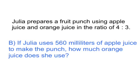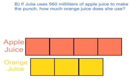On to part B — same setup. If Julia uses 560 milliliters of apple juice to make the punch, how much orange juice does she use? I'll begin with our same model. We have the 7 parts: 4 parts of apple juice to 3 parts of orange juice. What it's telling us is that the apple juice alone is 560 milliliters for 4 parts. How can we find just one part of the apple juice? Think about that for a moment.